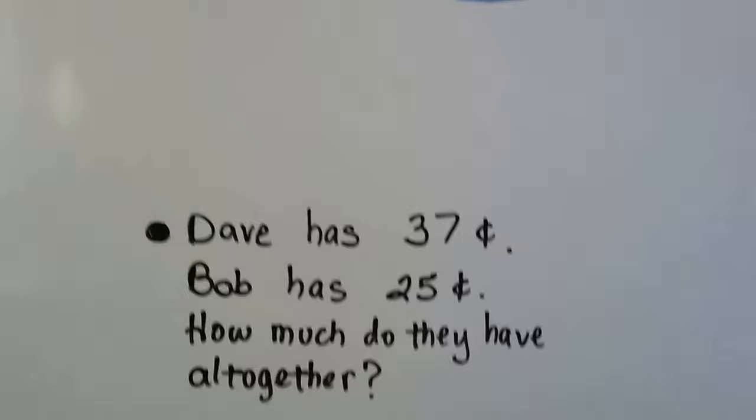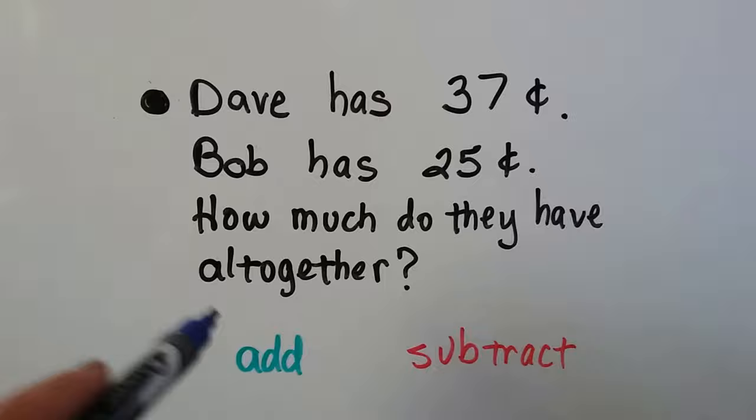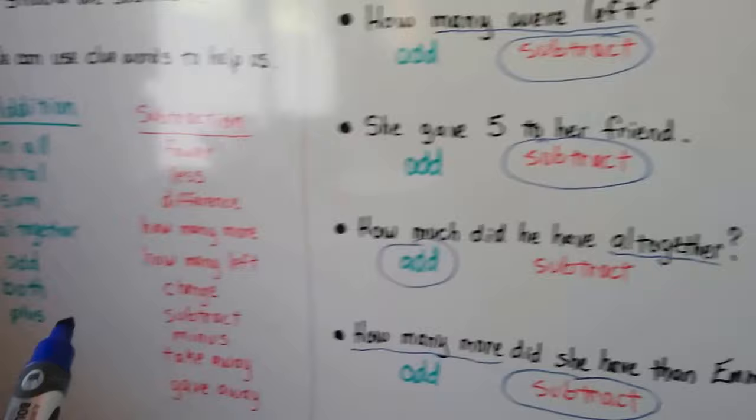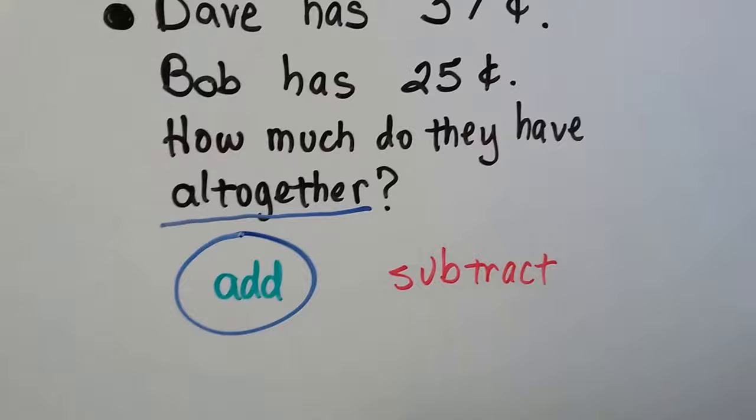Dave has 37 cents and Bob has 25 cents. How much do they have all together? Our clue word here is 'all together.' If you look at our clue word list, 'all together' is in the addition list. So we would need to add the 37 cents and the 25 cents all together to find out how much they had in all. So we would add.